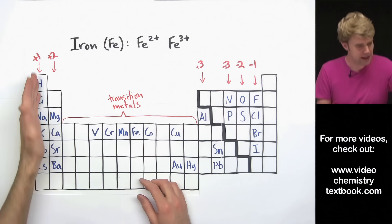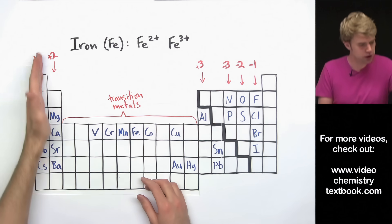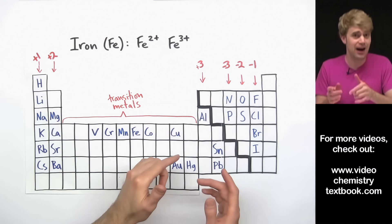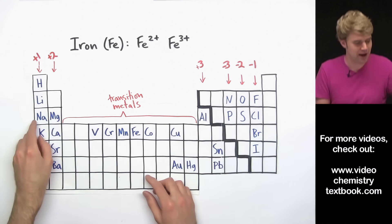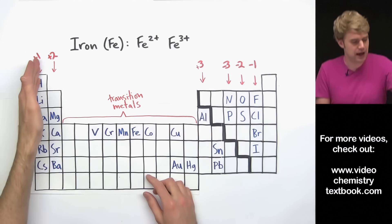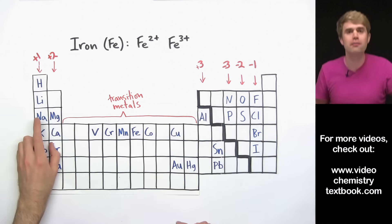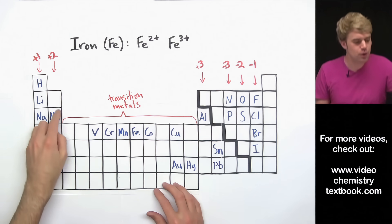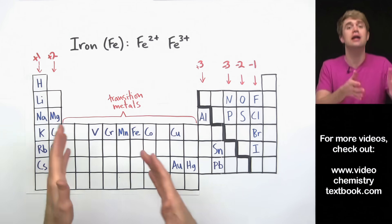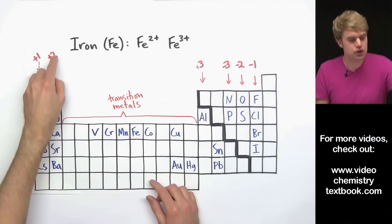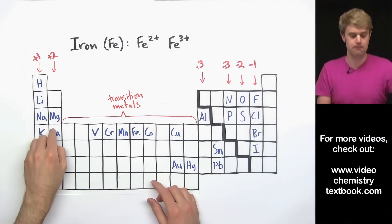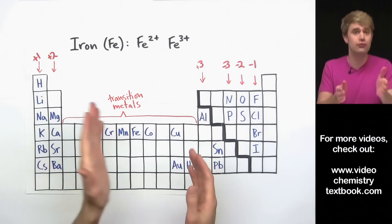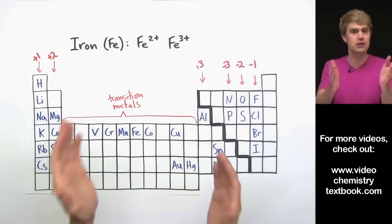Sodium, for example, is in this 1+ column here, and so when sodium is in an ionic compound, it always makes an ion with a 1+ charge. Magnesium here is in this 2+ column, so when it is in an ionic compound, it makes a 2+ ion. But the transition metals can make a wide variety of different ions with different charges.